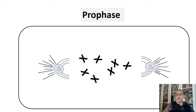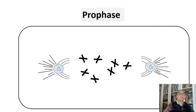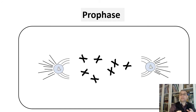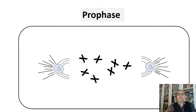Incidentally, in some fungi and protozoa, the nuclear membrane does not break down during mitosis. Instead, it pinches into two daughter nuclear membranes near the conclusion of cell division.